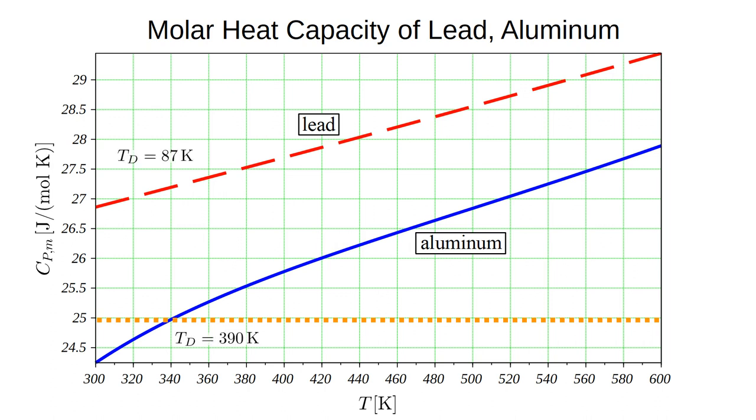The Debye temperatures are eighty-seven Kelvin for lead, and three-ninety Kelvin for aluminum. This allows us to understand why the aluminum plot is curved near room temperature, while the lead plot is not. Three hundred Kelvin is well above the Debye temperature of lead, so its vibrational degrees of freedom are completely thawed, and heat capacity follows the classical model with the anharmonic linear correction. But three hundred Kelvin is below the Debye temperature of aluminum, so its vibrational degrees of freedom are not completely thawed out. Only as temperature exceeds the Debye temperature does the graph transition to the linear behavior we have predicted.